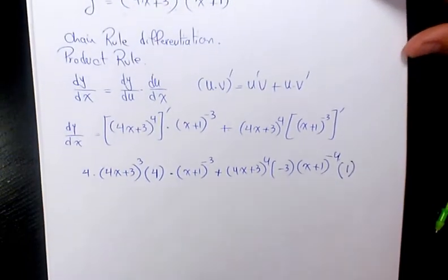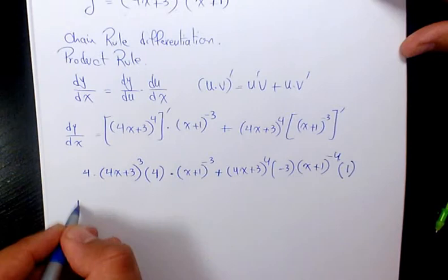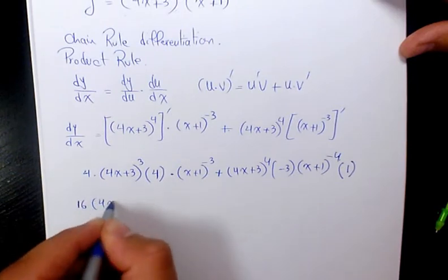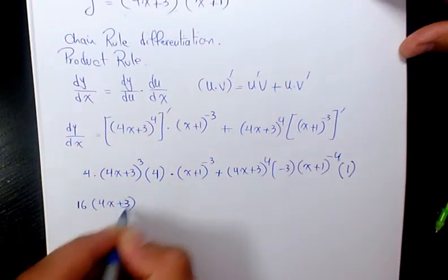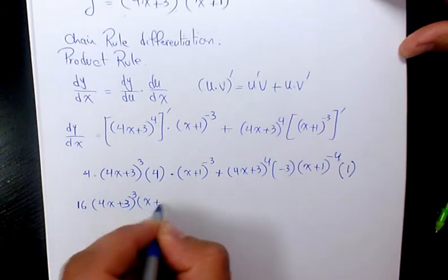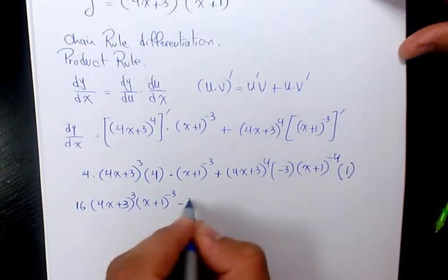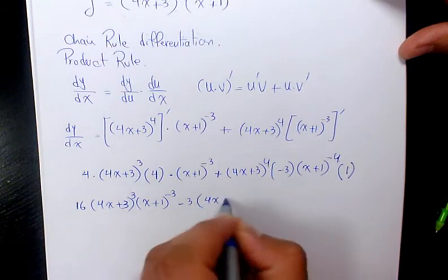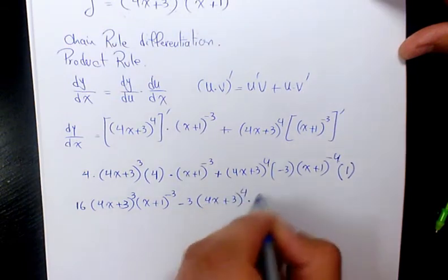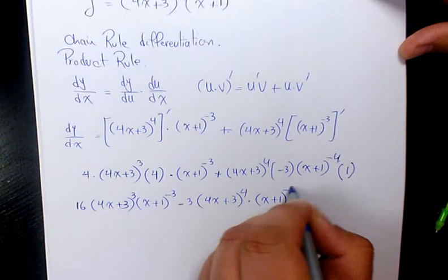Now let's simplify. 4 times 4 is 16. So we have 16(4x + 3)^3(x + 1)^(-3) minus 3(4x + 3)^4(x + 1)^(-4).